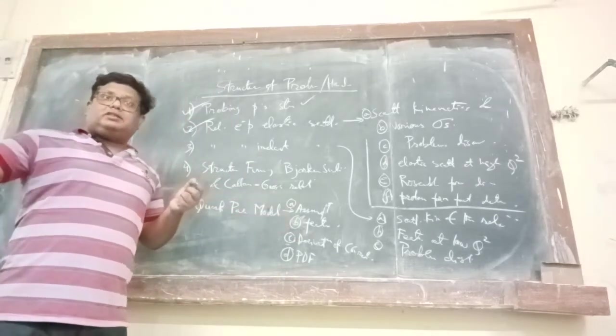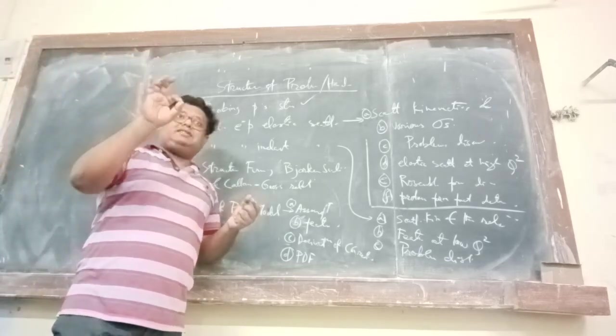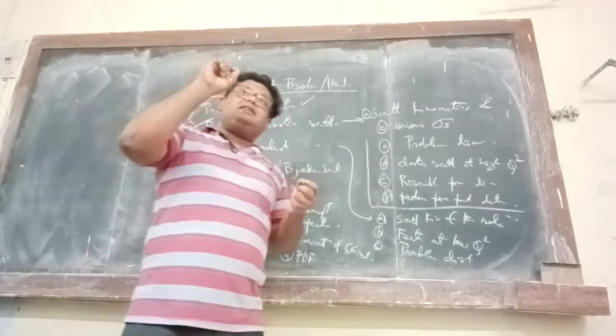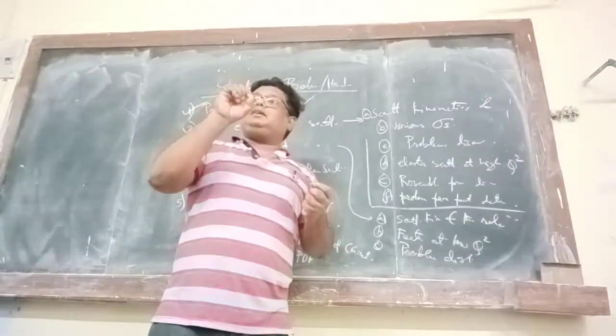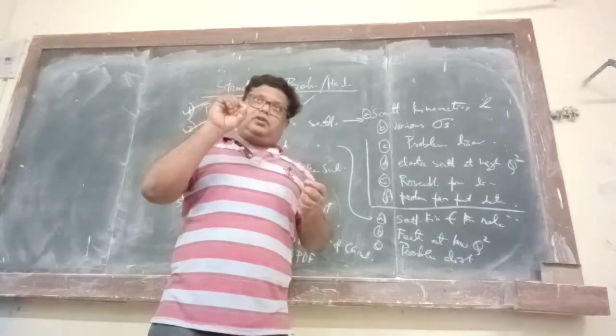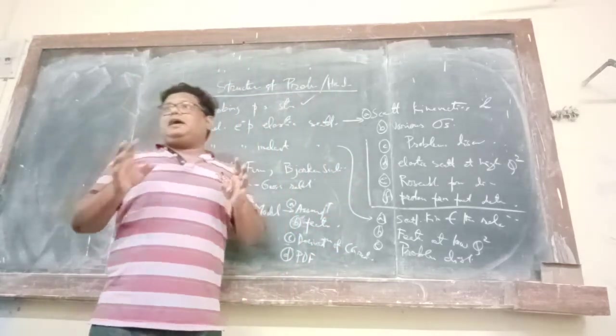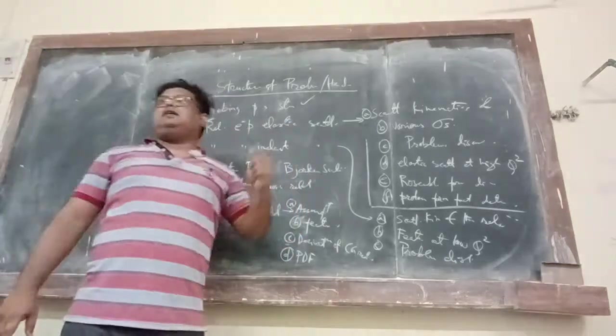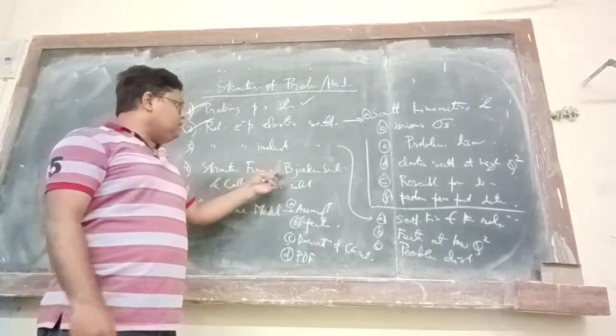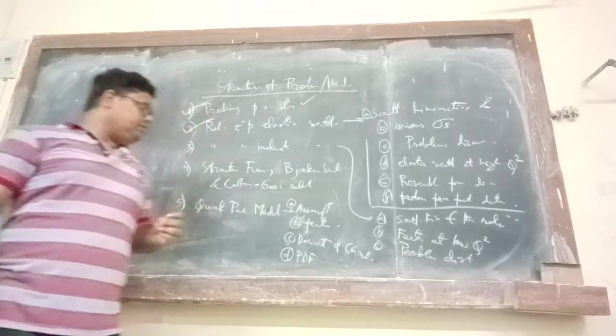So basically, structureless electron interacts elastically with various other structureless particles known as partons inside the proton. And this is the entire scenario which is happening. And this is how we can explain the experimental data along with Bjorken scaling and Callan-Gross relation, which are experimentally observed.